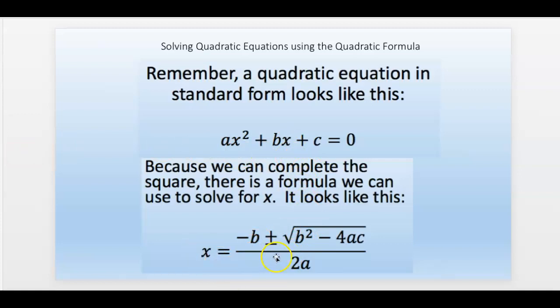When we do that, this is what happens: x equals negative b plus or minus the square root of b squared minus 4ac over 2a. That's the quadratic formula.